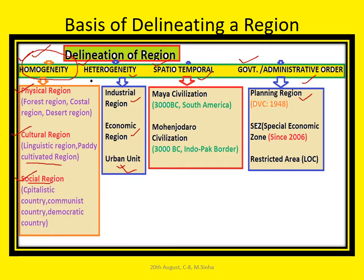So government and planners can delineate any region on the basis of: first, homogeneity; second, heterogeneity; third, the spatio-temporal scale; and last, by government order or government decision.